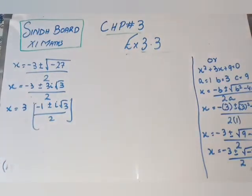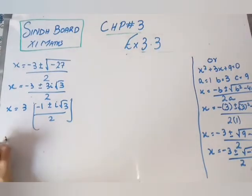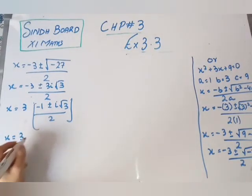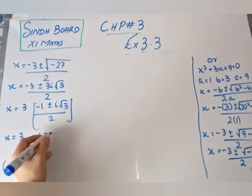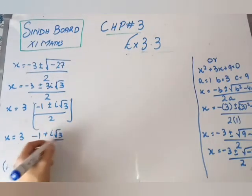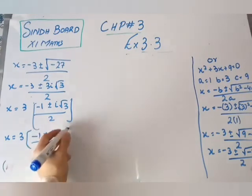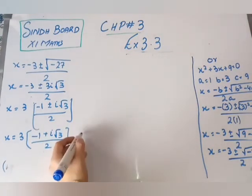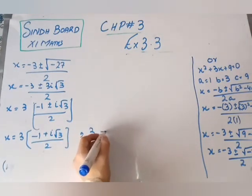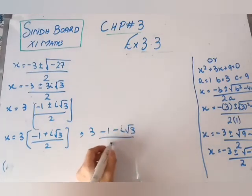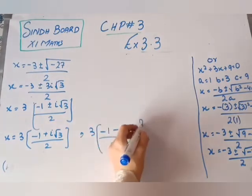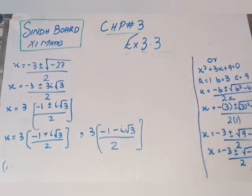Now applying the earlier result, x equals to 3 times (minus 1 plus or minus iota under root 3) upon 2. So the two values are: 3 times (minus 1 plus iota under root 3) upon 2, and 3 times (minus 1 minus iota under root 3) upon 2.